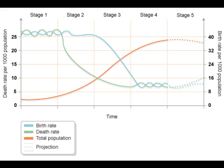The death rate is also very high because there is disease, famine, and poor medical knowledge, therefore many children die. Stage two is Early Expanding: birth rates still remain high, the death rate is falling rapidly, and this leads to a higher natural increase because the birth rate is higher than the death rate, so the population is growing.